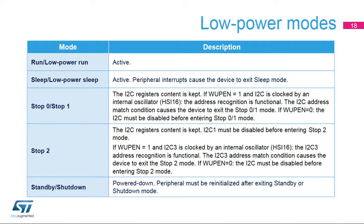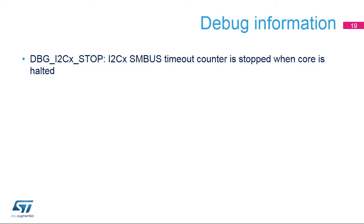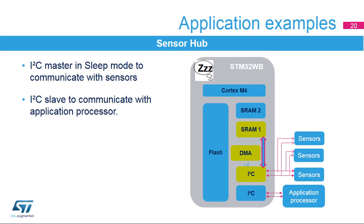The I2C peripheral is active in run and sleep modes. In stop mode, the peripheral clocks are off and the register's content is kept. In standby mode, the peripheral is powered down and must be reinitialized after exiting standby mode. For each I2C peripheral, a bit is available for debugging purposes in the MCU debug component that can be used to stop the SMBus timeout counter when the core is halted.